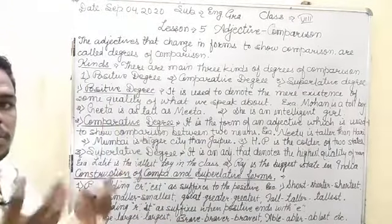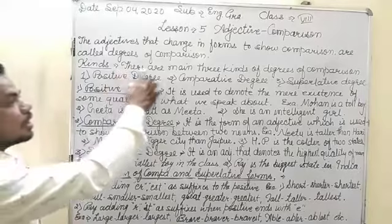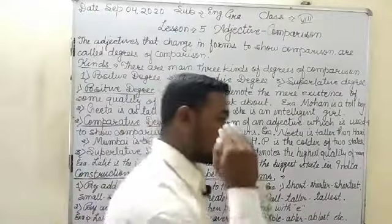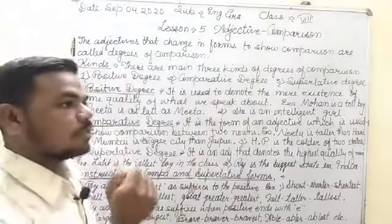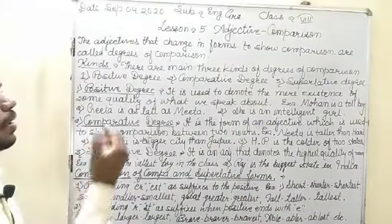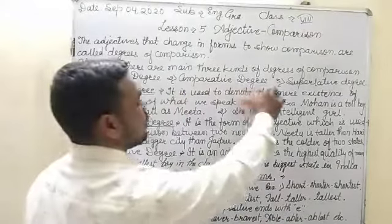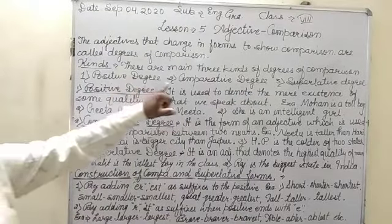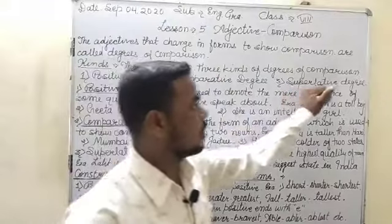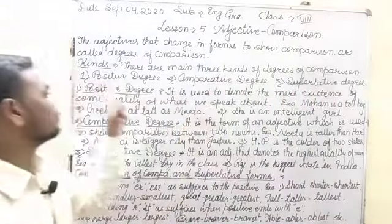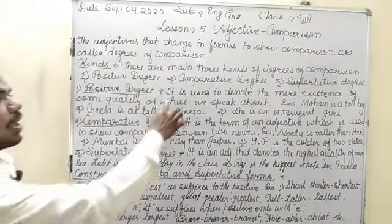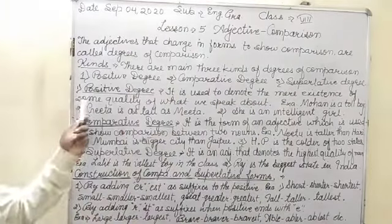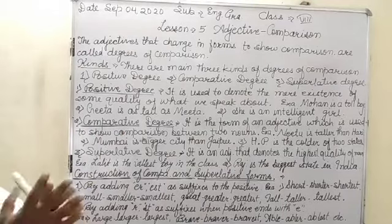First of all, let's talk about the degrees. There are three kinds of degrees of comparison when we are going to compare adjectives. First is positive degree, second is comparative degree, third is superlative degree.